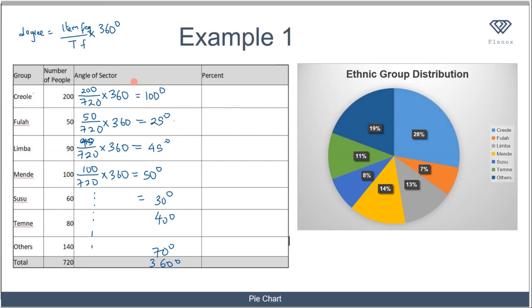Let's start with Krioli. Krioli is this blue region over here, and the angle is 100 degrees, so this angle here is 100 degrees. For Fula, this angle is 25 degrees, then here you have 45 degrees, and so on.